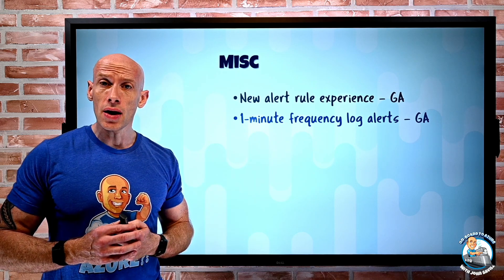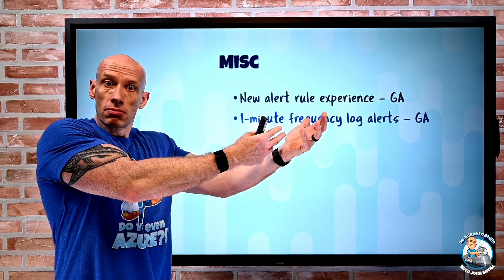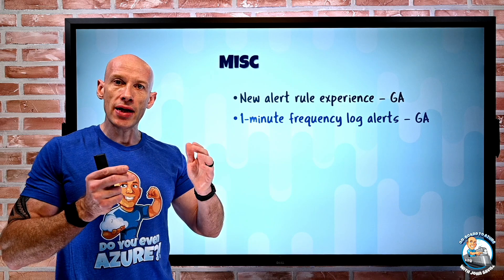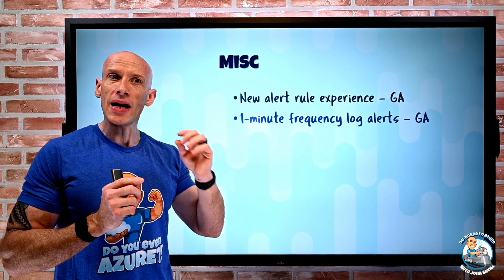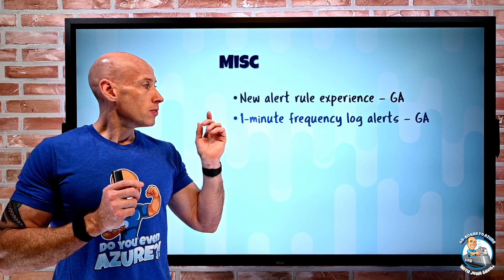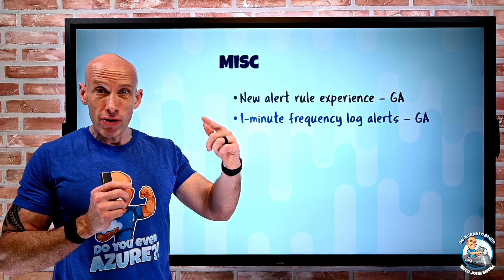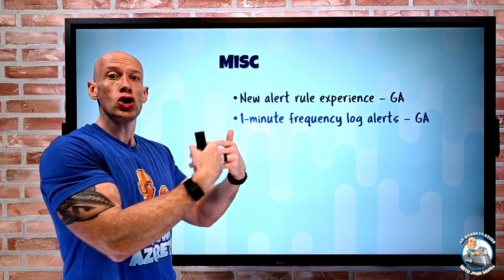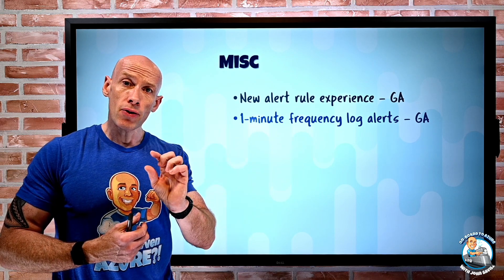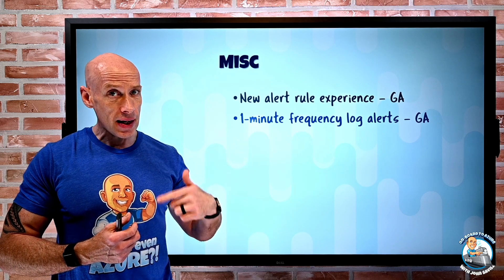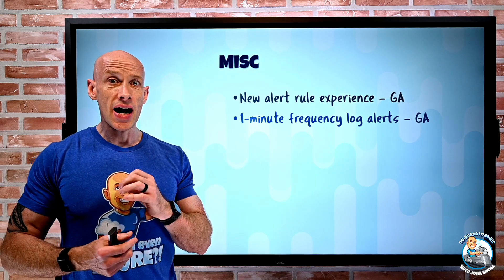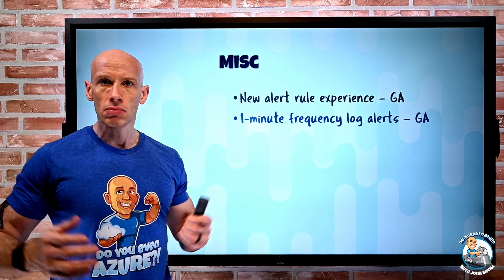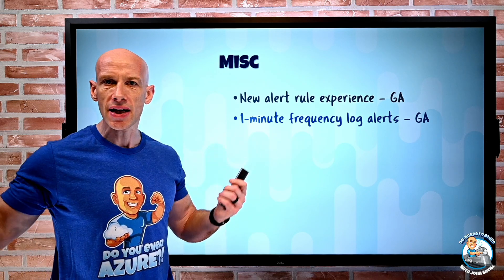One-minute frequency log alerts are now GA. One of the signal types for alerts is a log analytics workspace, where you create a Kusto query that runs at an interval you specify. Now I can make that interval as low as one minute — so every minute it runs the query looking for results and could trigger an alert to fire. The more frequently you run the query the more you'll pay, so you need to consider that. But for something super time-critical, you can go all the way down to one minute frequency.